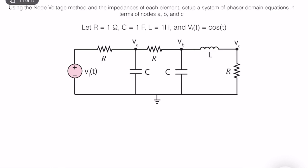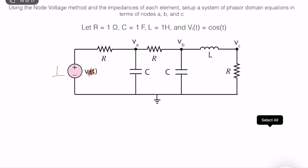Now we have a different problem. Using the node voltage method and the impedances of each element, set up a system of phasor domain equations in terms of nodes A, B, and C. We have one ohm resistors, one farad capacitor, and one henry inductor. The input is a cosine with omega equal to 1, so in the phasor domain it is simply 1. Resistances remain 1.